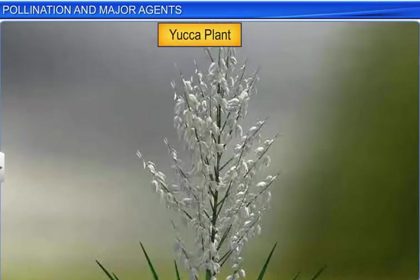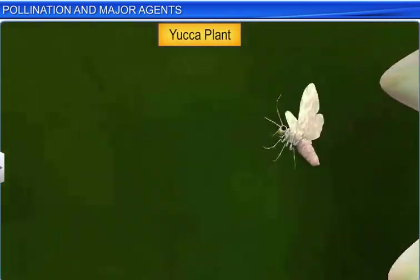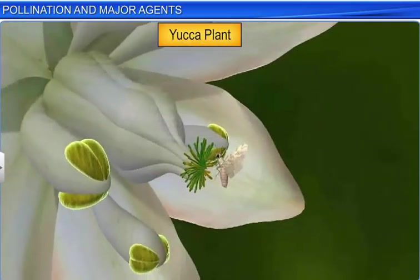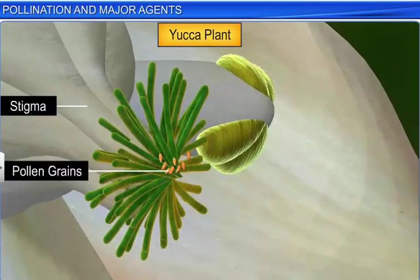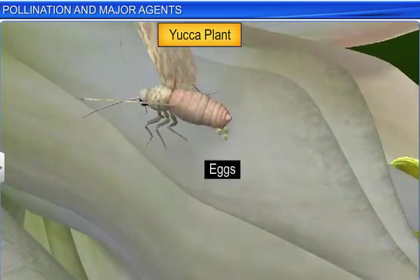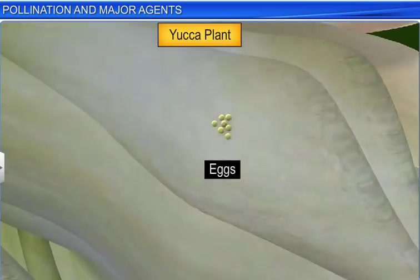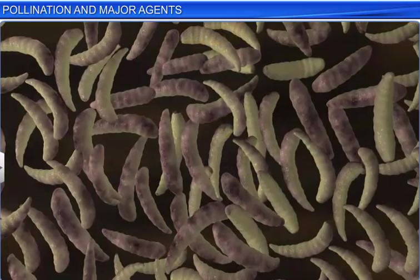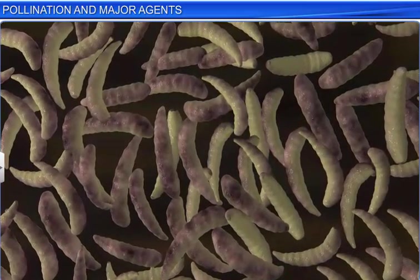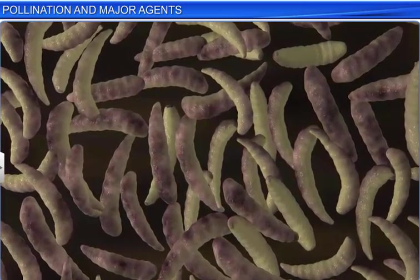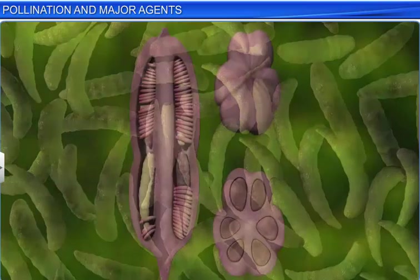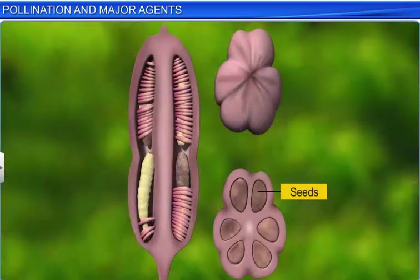In the Yucca plant, on the other hand, a female moth transfers the pollen of another flower to the stigma, and simultaneously deposits her eggs in the locule of the flower's ovary. The larvae which hatch out of the eggs start consuming some of the developing seeds, while leaving enough of them to propagate the plant. Thus, both the moth and the plant are dependent on each other for the completion of their respective life cycles.